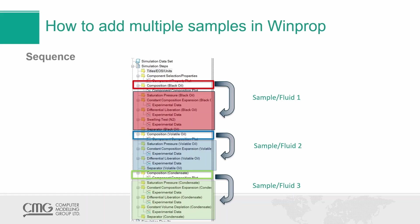The sequencing is really important given that Wimper works based on the order that you define. Experiments at the top of your Wimper project will be done first, and experiments at the bottom will be the last ones calculated. Every time that you define a new sample, the experiments below that sample will be calculated based on that composition. The example in this slide clearly shows a project where you have three different samples, each with a set of experiments.